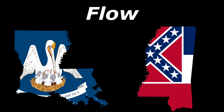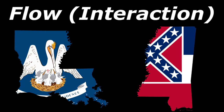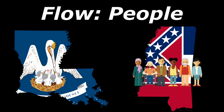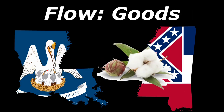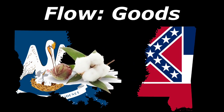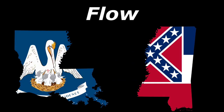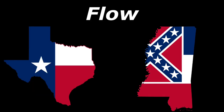Places also have a flow, which is basically the interaction between places. The flow could be people migrating from one state to another, or goods going from one state to another. The flow between Louisiana and Mississippi is going to be greater than the flow between Texas and Mississippi.